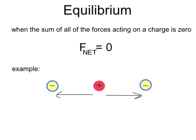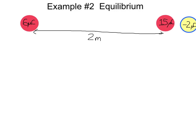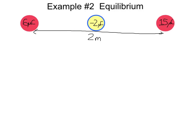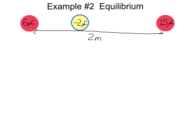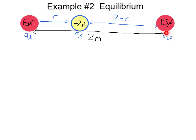Example number two: equilibrium. Suppose we have a 6 microcoulomb and a 15 microcoulomb charge separated by 2 meters. Where should we put a negative 2 microcoulomb charge so that when we let go it balances and doesn't move? Placing it directly in the center might not work, because the 15 microcoulomb charge will attract it more than the 6 microcoulomb charge will. So we should put it a bit closer to the 6 microcoulomb charge. These two forces will have to be equal for equilibrium.